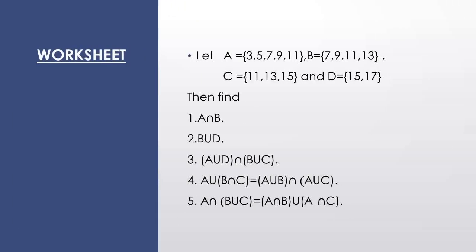Today you will do this worksheet. These four sets are given. First, you have to find out A intersection B. A intersection means दोनों के बीच में common — so 7, 9, and 11 are common. Second is B union D, so B union D will be {7, 9, 11, 13, 15, 17}.